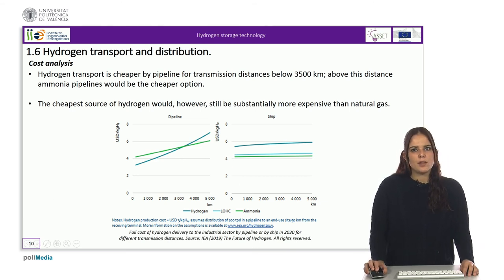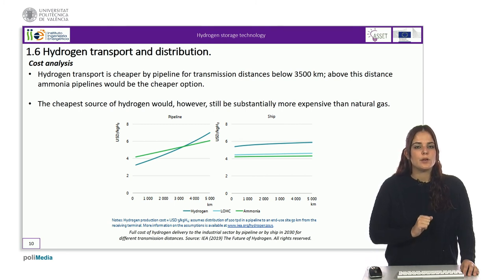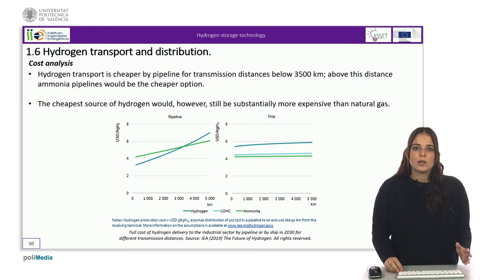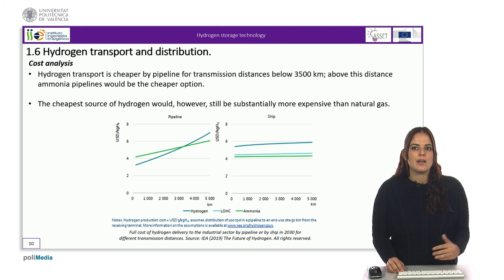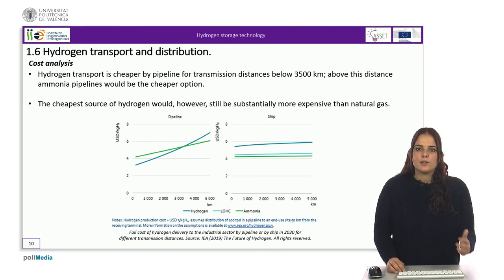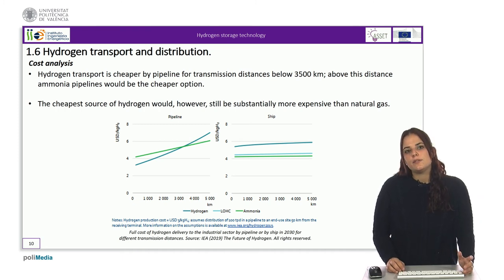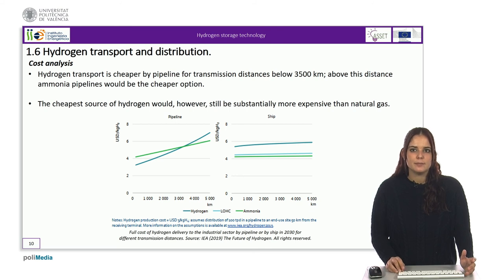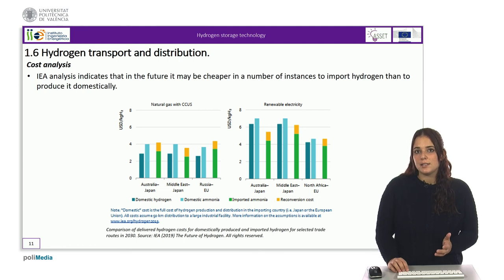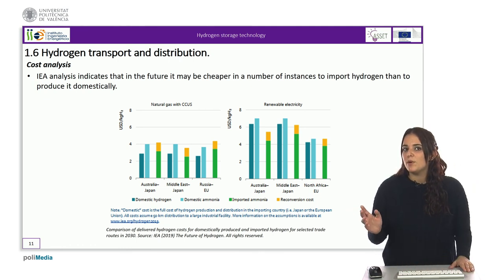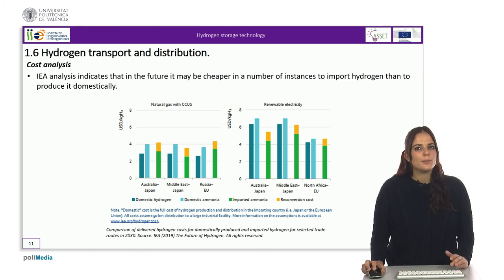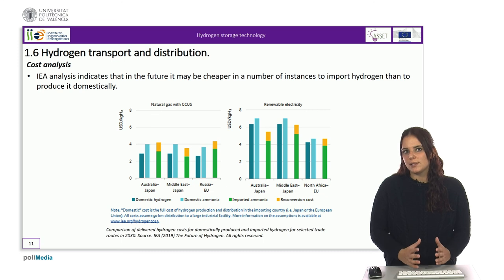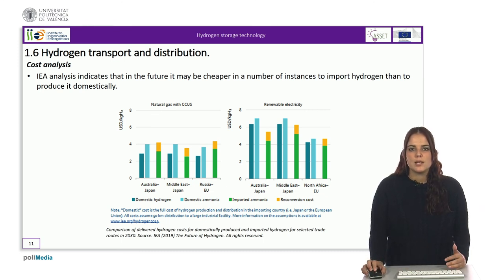The cheapest source of hydrogen would, however, still be substantially more expensive than natural gas. Although the actual cost differential may be slightly smaller because some hydrogen end-use devices may have a higher efficiency than natural gas devices, further cost reduction would be needed to improve the competitiveness of hydrogen against natural gas systems. International Energy Agency analysis indicates that in the future it may be cheaper in a number of instances to import hydrogen than to produce it domestically. Imports of hydrogen produced from renewable electricity appear to make sense for a number of possible trade routes.